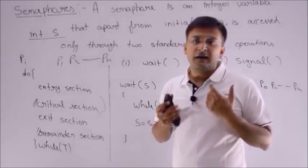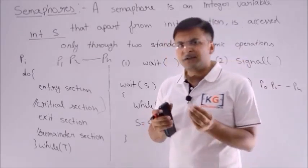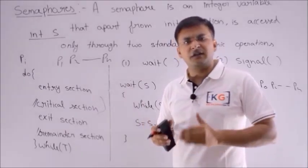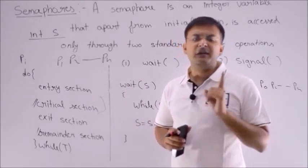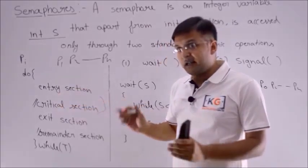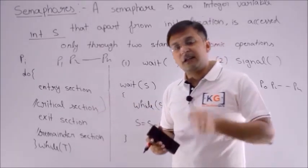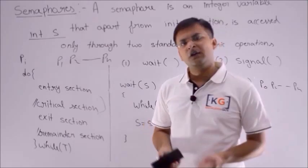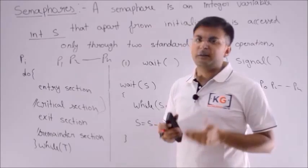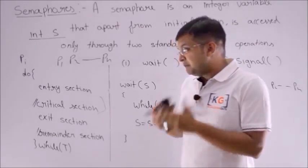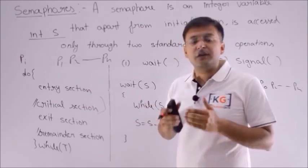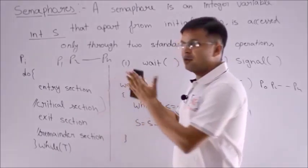The first criterion is mutual exclusion — only one process at a time can enter the critical section. Because you have shared data being accessed, in the critical section only one process can enter at a time. If that happens, automatically there will be no problem. The second criterion is progress — only those processes should compete to enter the critical section that actually want to enter it. No process outside the critical section should block others, and you have to ensure bounded waiting.